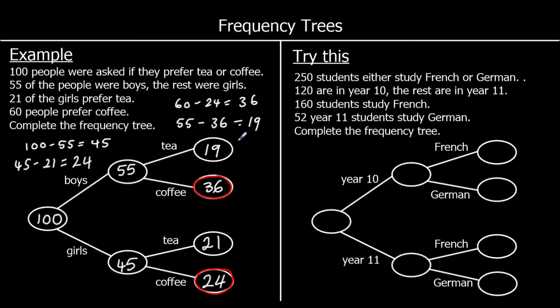So that is a completed frequency tree. So in total, these numbers add up to 100. So 19 boys prefer tea, 36 boys prefer coffee, that makes 55. And 21 girls prefer tea, 24 girls prefer coffee, that makes 45. So in total, we've got the 100 people.